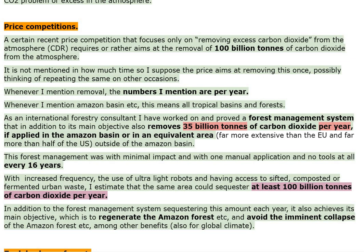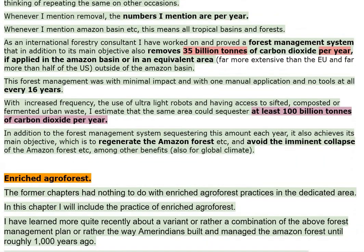Whenever I mention Amazon basin, this means all tropical basins and forests. As an international forestry consultant, I have worked on and proved a forest management system that, in addition to its main objective, also removes 35 billion tons of carbon dioxide per year if applied in the Amazon basin, or in an equivalent area far more extensive than the EU and far more than half of the US, outside of the Amazon basin. This forest management was with minimal impact and with one manual application and no tools at all every 16 years.